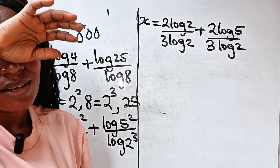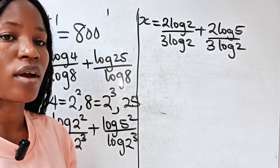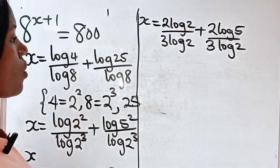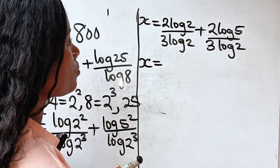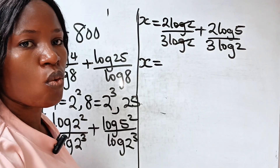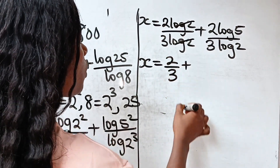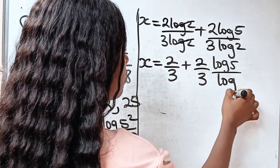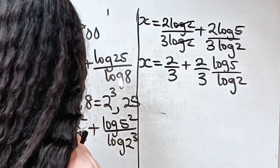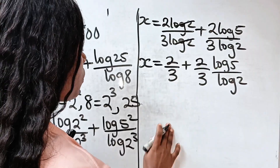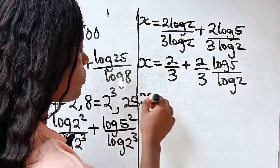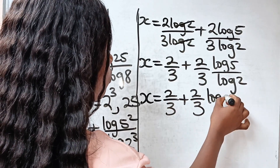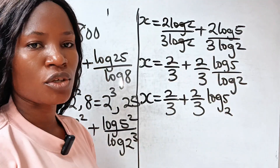I would like you to watch to the end and see how I prove that the answer I got is correct — that is the most interesting aspect of this video. So we have that x is equal to 2 over 3 plus 2 over 3 log 5 base 2, using the change of base rule.